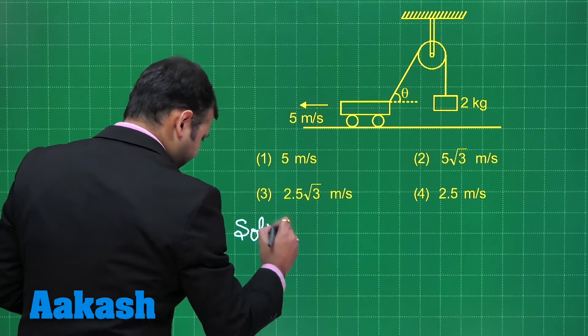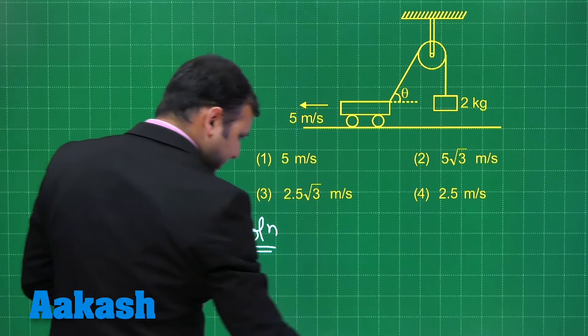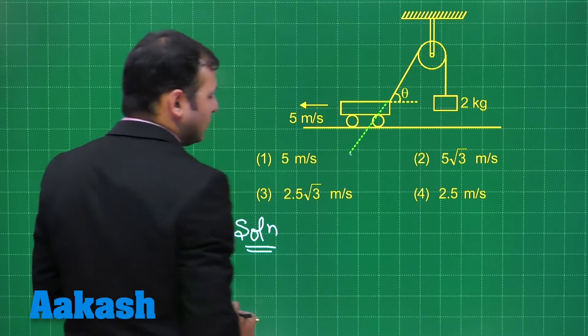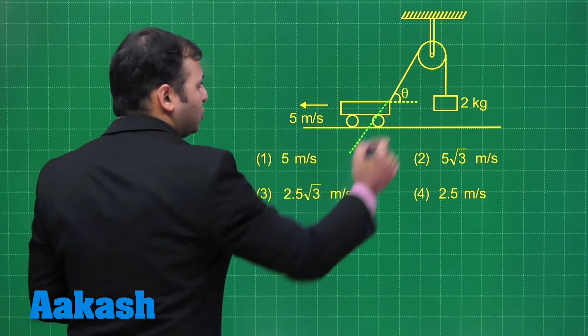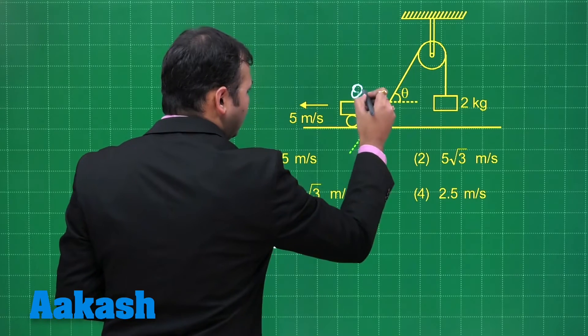Let's start with the solution. In the case of constraint motion, I would draw a line like this, which is parallel to the string. If you see this is θ, this angle will also be θ.